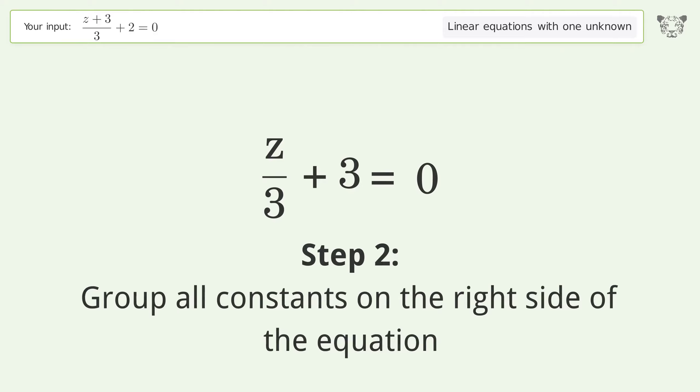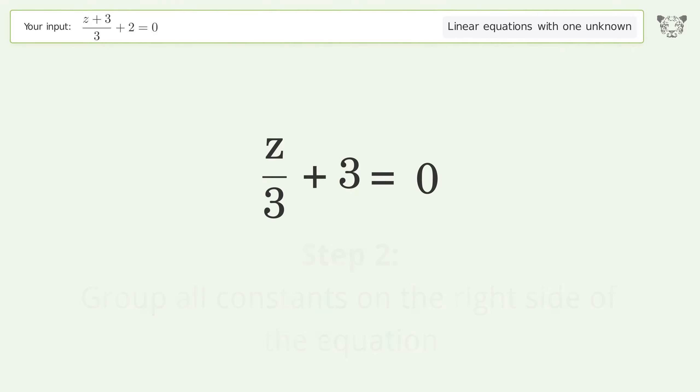Group all constants on the right side of the equation. Subtract 3 from both sides. Simplify the arithmetic.